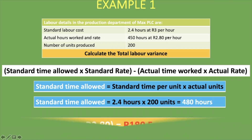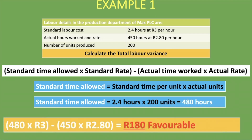The full calculation: standard time allowed 480 hours × standard rate 3 rand, minus actual time worked 450 hours × actual rate 2 rand 80. This gives us 180 rand favorable. The standard time allowed was 480 hours but we actually worked only 450, and the actual rate of 2.80 was less than the standard rate of 3 rand.